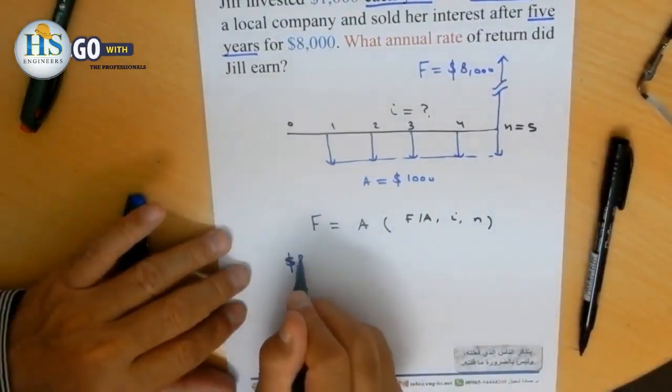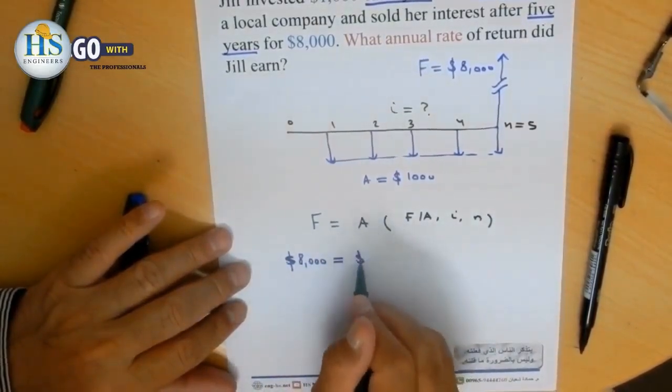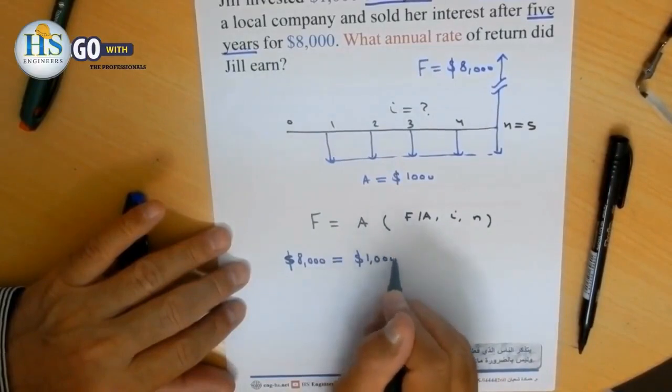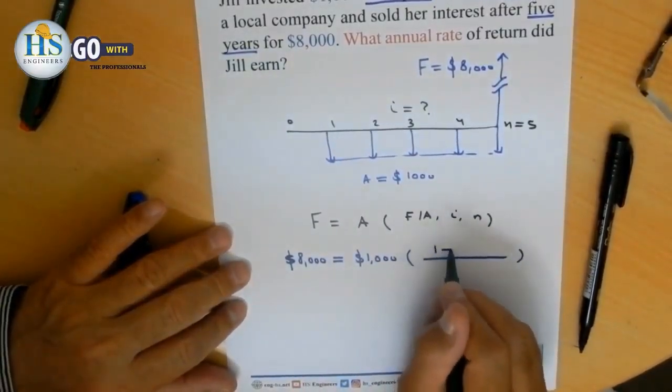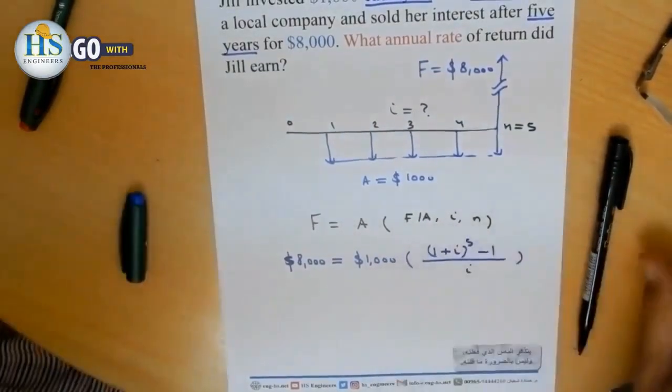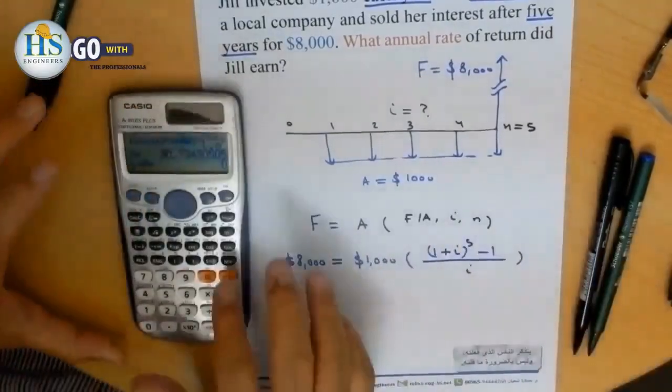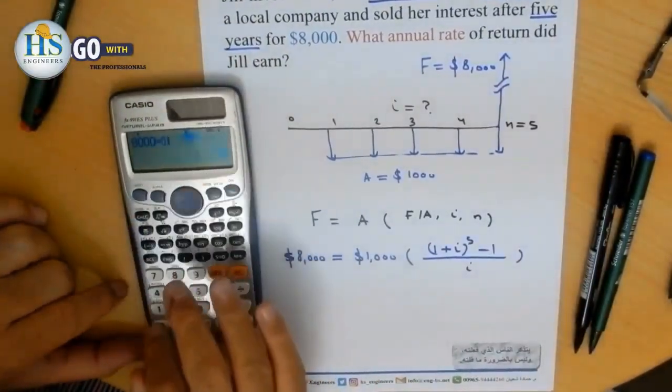So we substitute: $8,000 which is F equals $1,000 which is A, times the formula F given A which is (1 plus i) to the power of 5 over i. Entering this into the calculator, I'll say $8,000 equals $1,000...